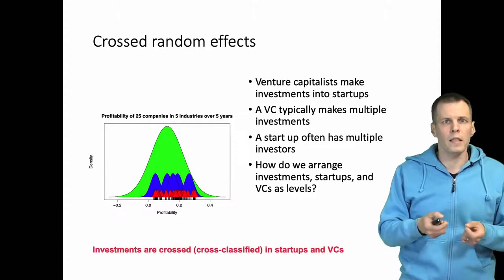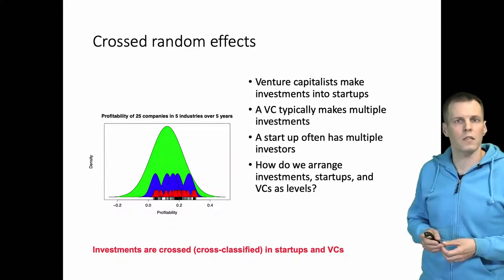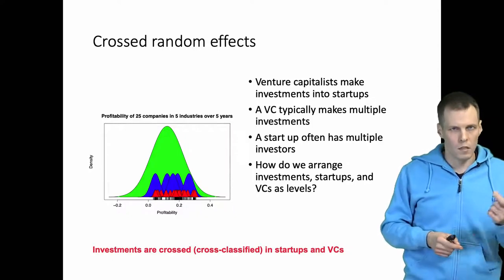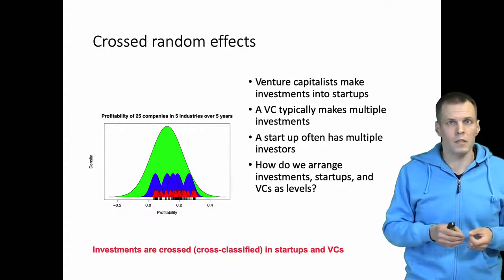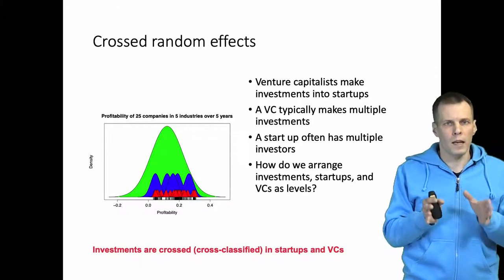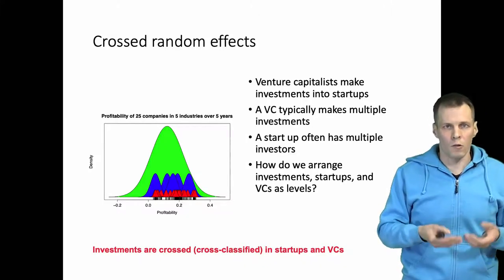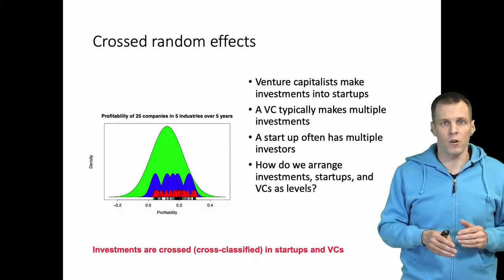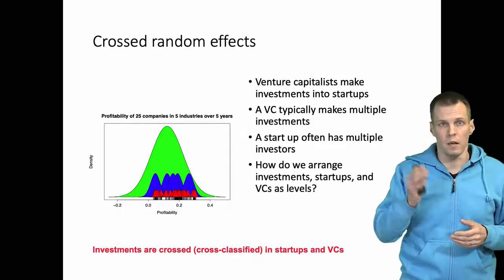What we would say is that these are crossed. The investments are crossed in startups and venture capitalists, so that each investment has one venture capitalist and one startup. But each venture capitalist can have multiple investments, and each startup can have multiple investments. So instead of looking at the data as a tree-like hierarchy, we look at the data like a cross-tabulation of two dimensions, where each cell has one investor and one investment target, and each investment target and its investor can have multiple investments.